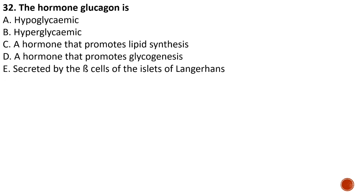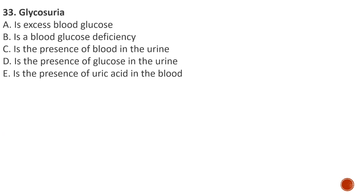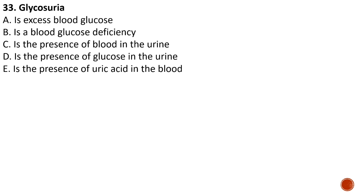Question number thirty-two: the hormone glucagon — A) is a hypoglycemic hormone, B) is hyperglycemic, C) promotes lipid synthesis, D) promotes glycogenesis, E) is secreted by B cells of the islets of Langerhans. The correct answer is B — glucagon is a hyperglycemic hormone that helps to increase the amount of glucose present in blood plasma. Question thirty-three: glycosuria describes a situation where reducing sugars such as glucose, galactose, fructose, and lactose are present in urine — the answer is D, the presence of glucose in urine.